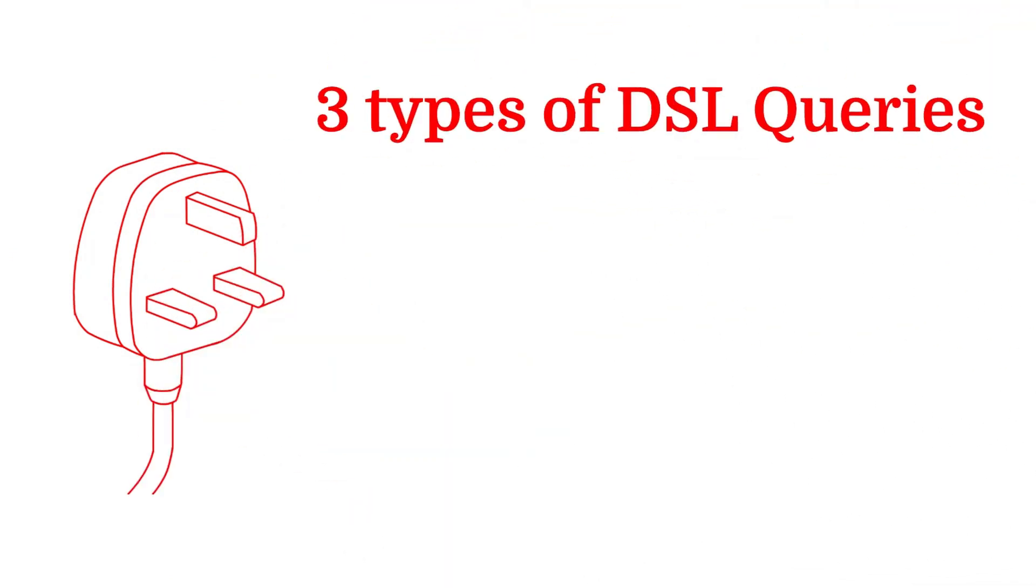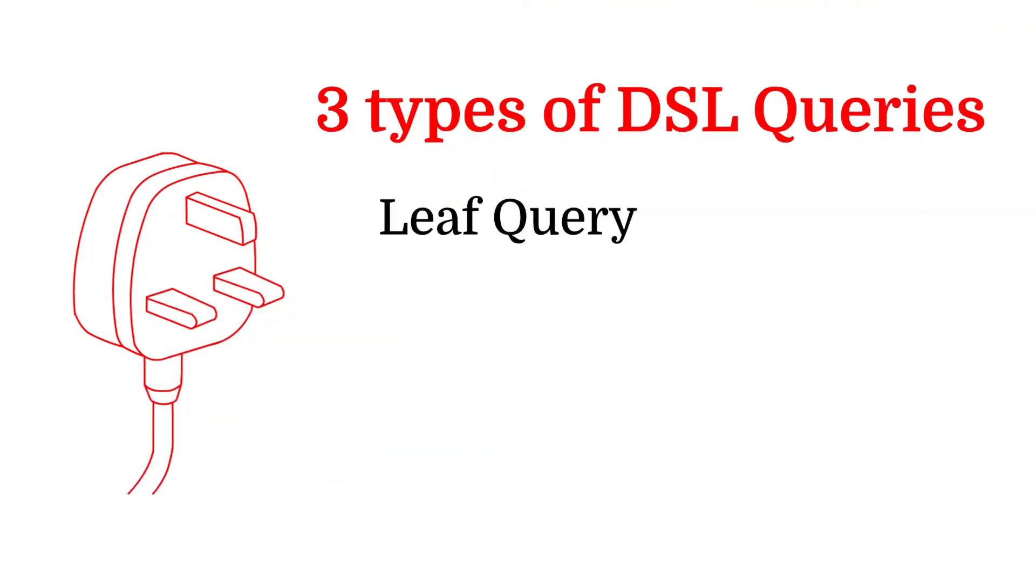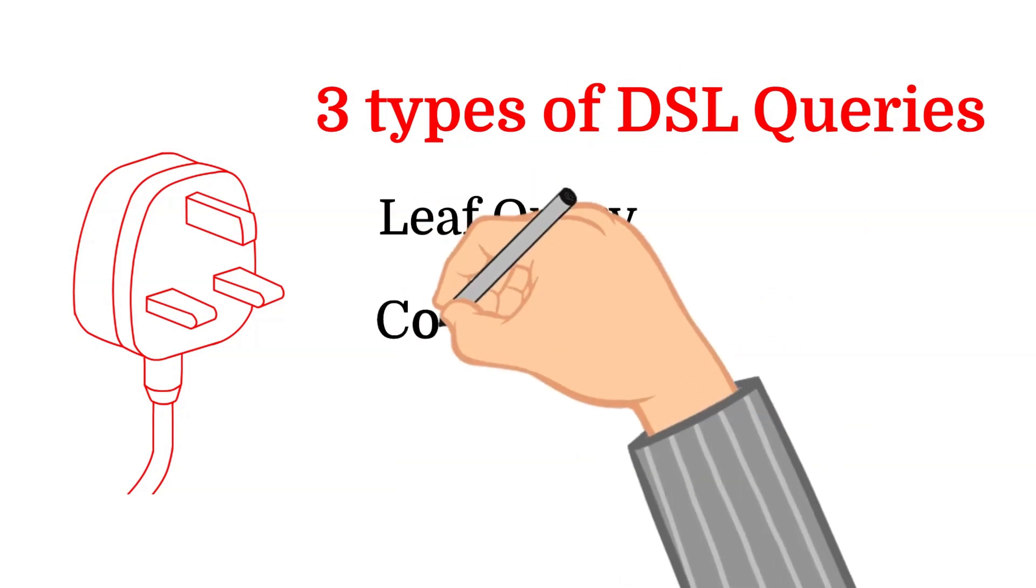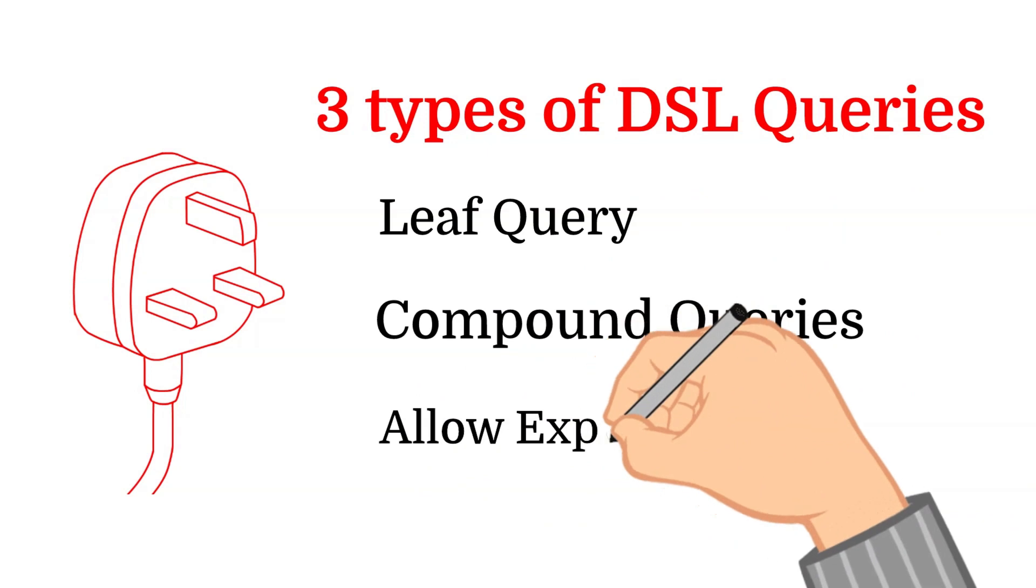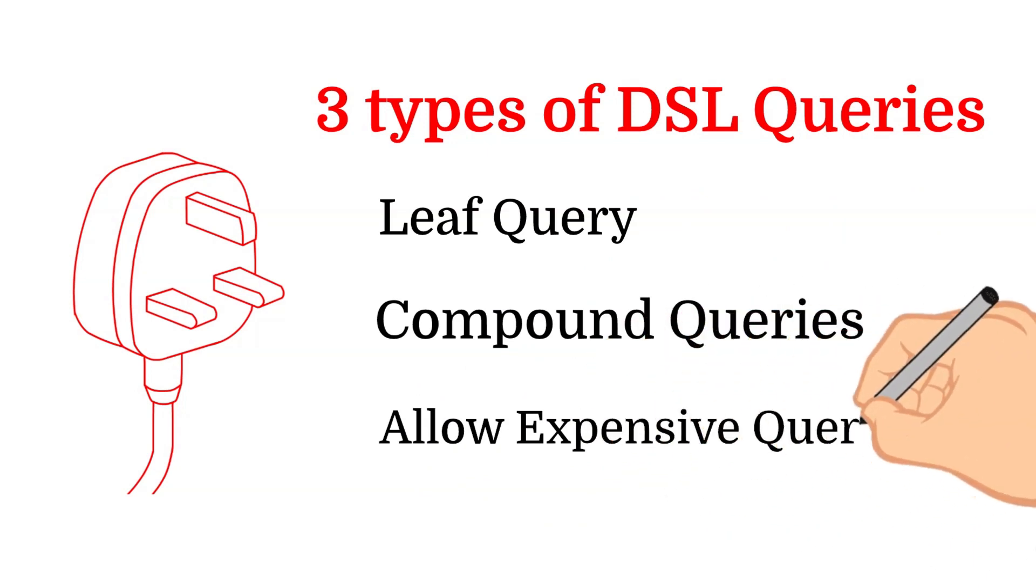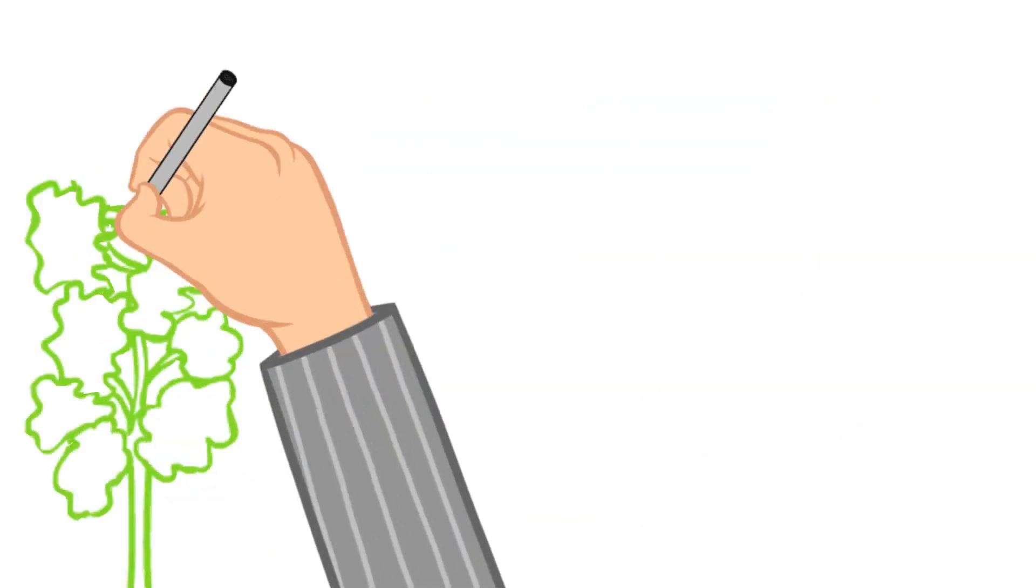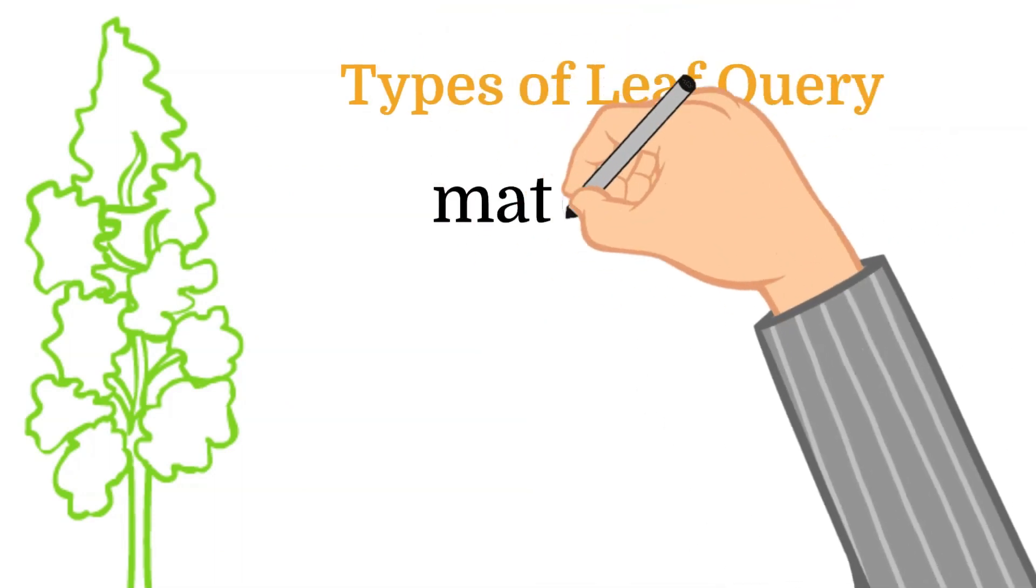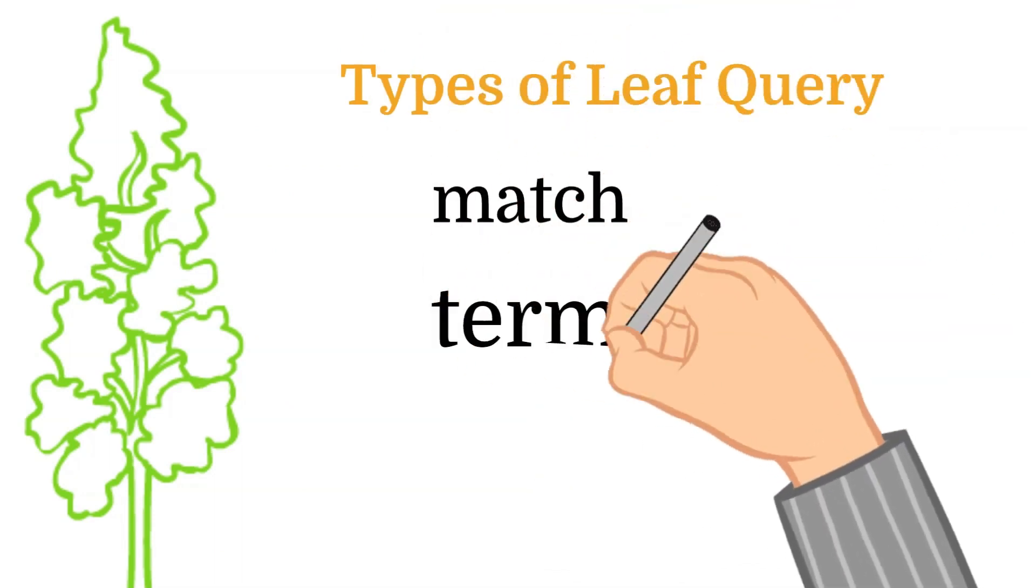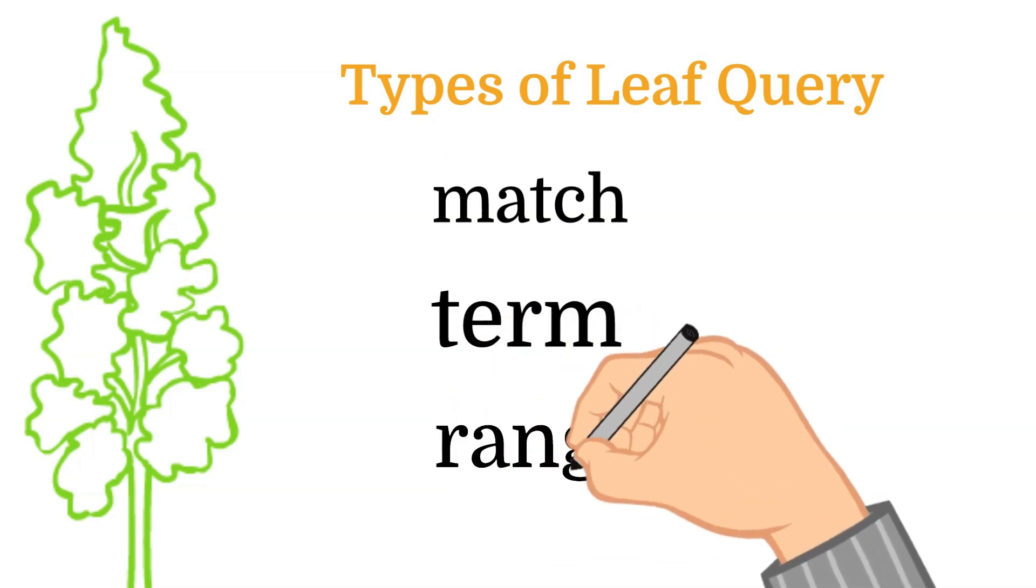There are three types of DSL queries. The first one is the leaf query, second is the compound queries, and the third is known as allow expensive queries. Let's learn more about leaf query. Some examples of leaf queries are match, term or range queries. I will show an example of each.